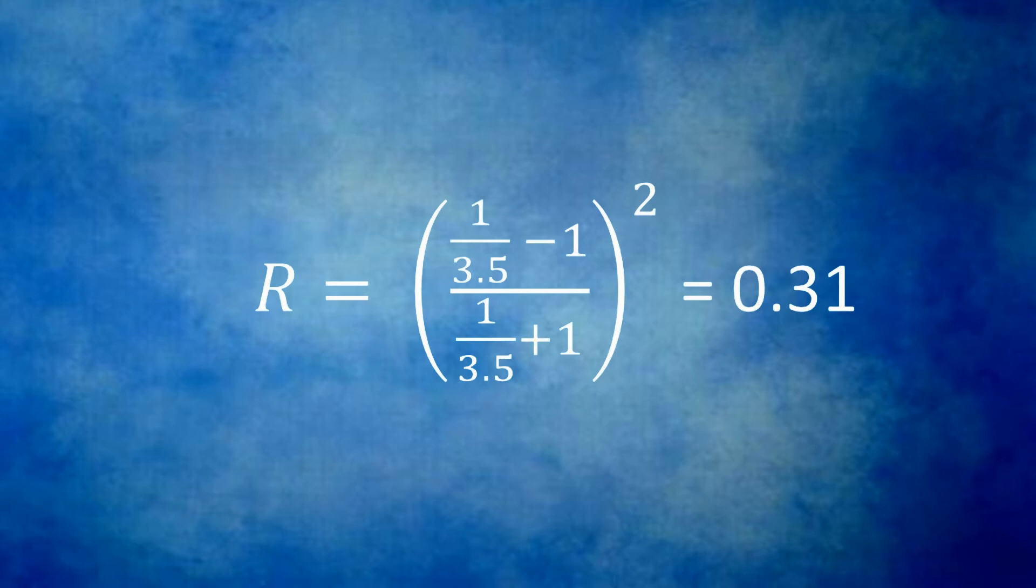That is, only 69% of the photons are actually going to penetrate into the silicon where they have the possibility of creating a photogenerated charge.